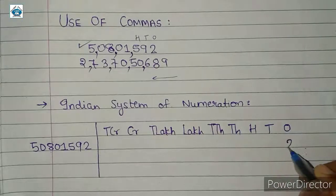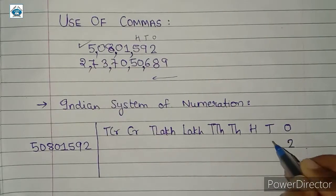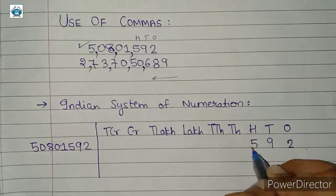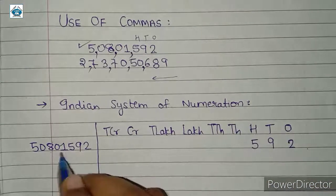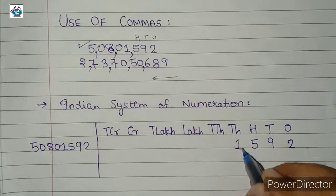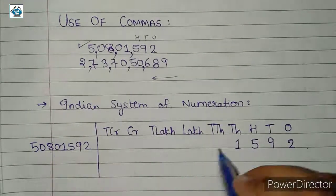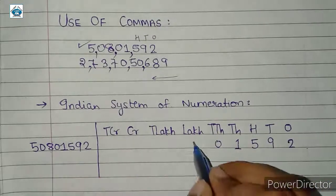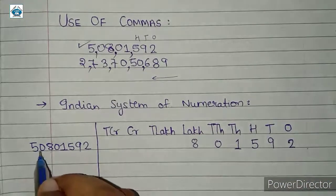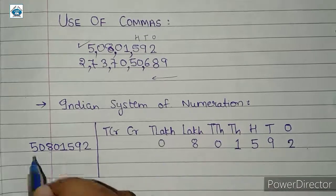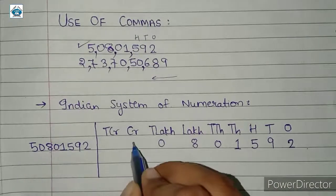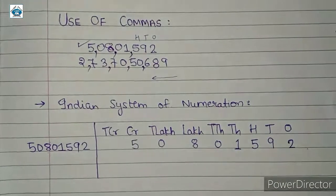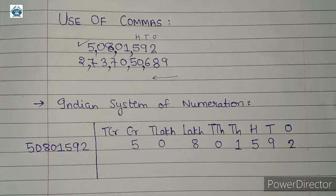So here 2 will come in the ones place, 9 will come in the tens place, 5 will come in the hundreds place, 1 will come in the thousands place, 0 will come in the ten-thousands place, 8 will come in the lakhs place, 0 will come in the ten-lakhs place, and 5 will come in the crores place.